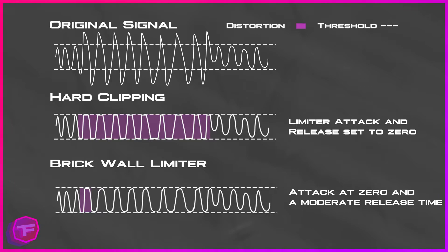When using an audio limiter, there are a few things to be aware of. When limiting, you can cause what is called clipping. If you set an attack and release time both at zero, you will cause clipping — it clips the audio signal and makes it squared. A brick wall limiter has an attack time set to zero but a moderate release time, so at the beginning of the audio signal you'll see it clip and distort briefly, then the audio is limited within the threshold.